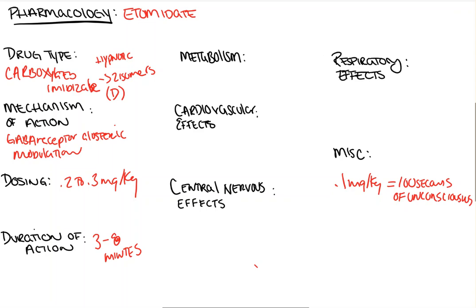Etomidate is primarily metabolized via ester hydrolysis, and this occurs in the blood, and it's then excreted in the urine. But just like propofol and many other drugs, the major cessation of the hypnotic effect — when the drug really stops working — is a result of redistribution out to peripheral tissues. That's a function of the three-compartment model we'll get into in a separate video. Basically, the drug stops working because it leaves the brain and goes to other places.